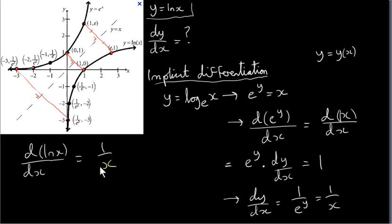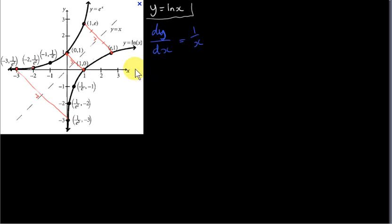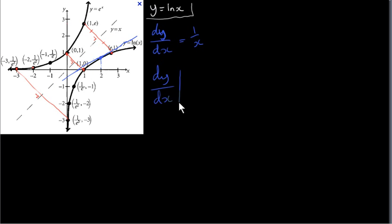This is a standard derivative given in tables. Suppose we want the slope of the tangent to y equals ln of x at x equals 2. The slope of a tangent is dy/dx, and if we want to find it at x equals 2, we just plug 2 in to get one half. So the slope of this tangent line is one half, meaning if we increase x by 2, y will increase by 1.